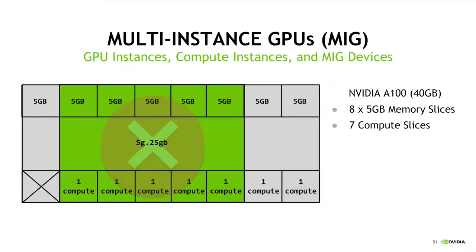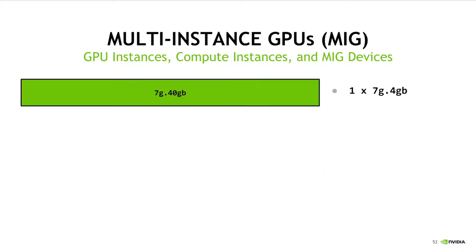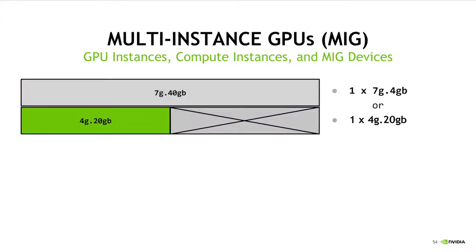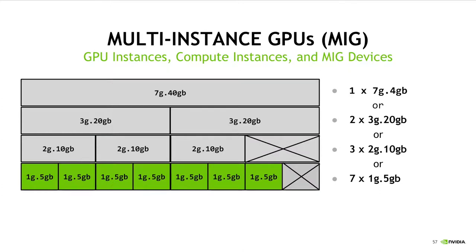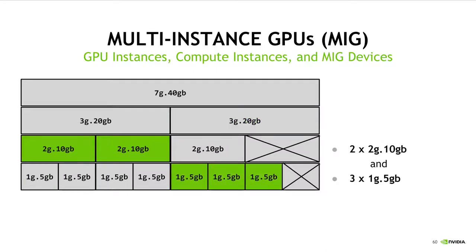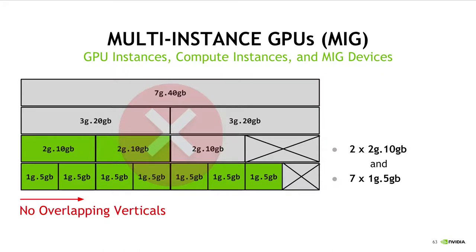Now, we can't just arbitrarily create MIG devices with any combination of memory slices and compute slices. There is a distinct set of MIG devices which actually can be created. This diagram represents the physical layout of how these MIG devices are created on the actual hardware, so finding a valid combination consists of walking from left to right and adding devices into the configuration such that no two devices overlap vertically. When applied to an actual node, configurations like striping a single device type across all GPUs on the machine are most common.